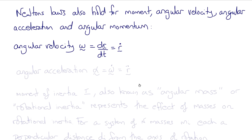Angular acceleration, alpha, is the time derivative of the angular velocity, so alpha equals omega-dot, or the second derivative of theta, theta double-dot.